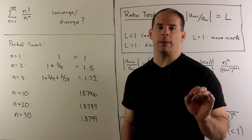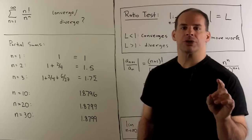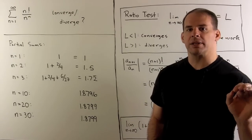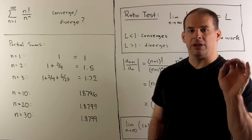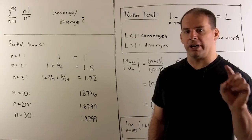We'll have two approaches to the problem. In the first, we use the ratio test. To make that work, we'll need to know a fact about the number e.